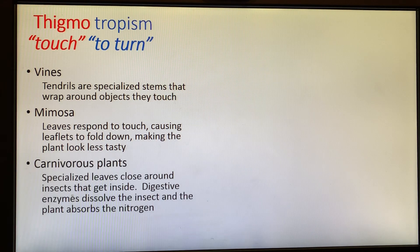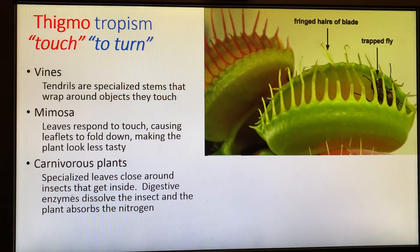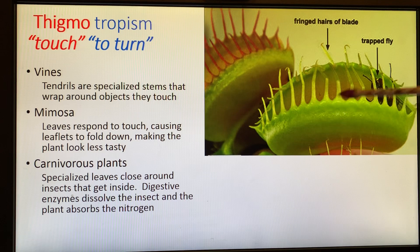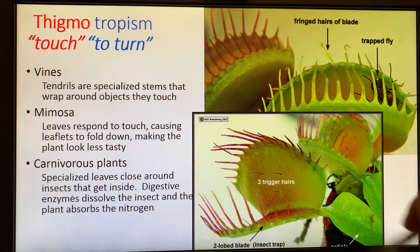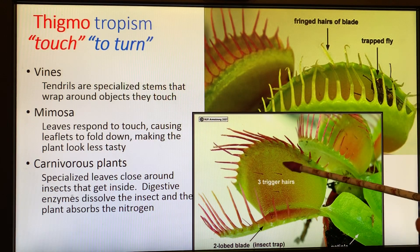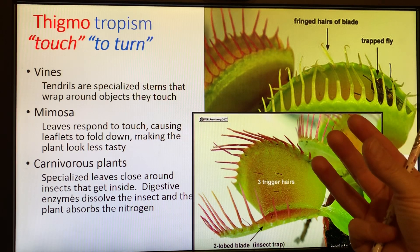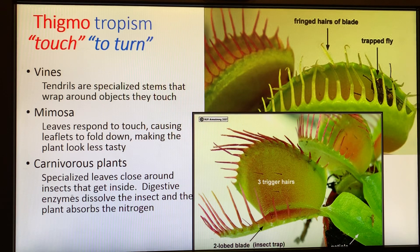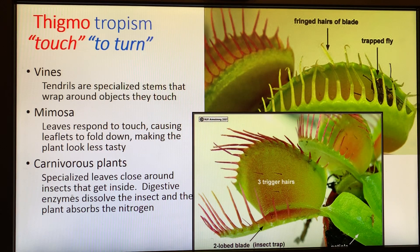A third form of thigmotropism is carnivorous plants. These have specialized leaves that close around insects to digest them. This is a Venus fly trap and those are two leaves and the fly gets trapped inside. If you look at the inside, they have these three little hairs there called the trigger hairs. Those hairs, if they get touched, cause these two leaves to bend in. Some sort of insect crawls in there and it triggers it. It takes a few moments but it closes down and these little fringed hairs kind of hold them in by the trap and it gets tighter and tighter.